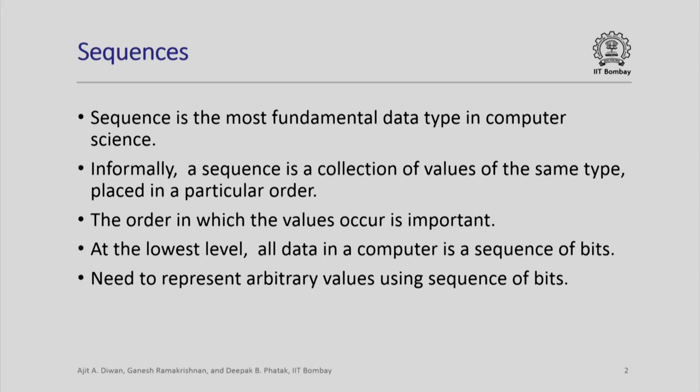Welcome to this new session in which we will be looking at a new abstract data type called sequences. So far we have only looked at basic natural numbers, but we come across many different types in computer science, and sequences is one of the most fundamental data types that occurs in computer science. Informally, a sequence is just a collection of values of the same type placed in a particular order, and the important point is that the values occur in a particular order. At the lowest level, if you look at all data in a computer, it is nothing but a sequence of bits.